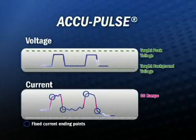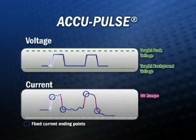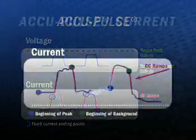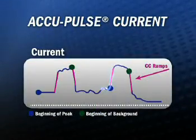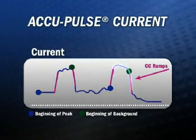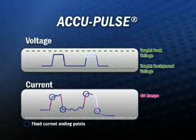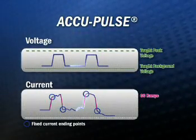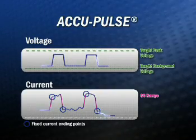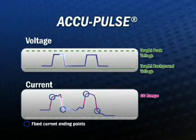AccuPulse samples the arc voltage 10,000 times per second during the peak and background time, allowing it to adapt hundreds of times faster than other systems. In addition to using speed for improvement, AccuPulse adjusts the current to a predetermined level at the beginning of each peak and background phase. AccuPulse ramps the current up or down to stay within the range of the proper level for a specific wire diameter and type, wire feed speed, and gas combination, which means a proper arc condition is much more likely.